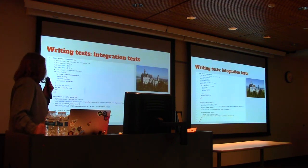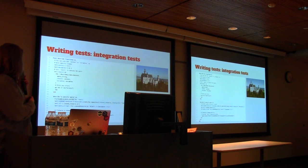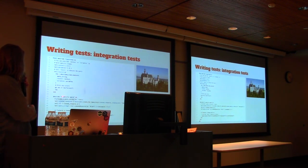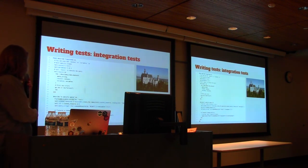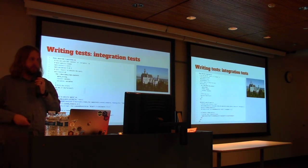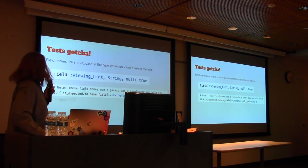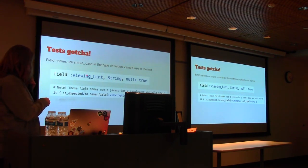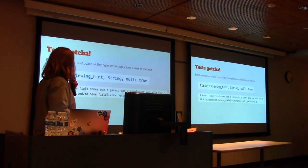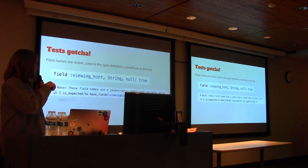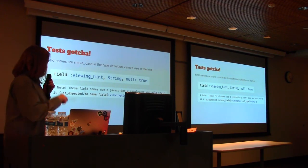It's nice to make sure you can actually run a real query through it. Here you can see the schema object that the controller runs — I can just run a real query, this is what a GraphQL query looks like, and make sure it actually returns the real value. One gotcha in tests: you put your field name in as viewing_hint (snake case), but all your tests are going to say viewingHint (camel case). The library turns everything to camel case, and this is also how you're going to have to run GraphQL queries. It caught us up multiple times.